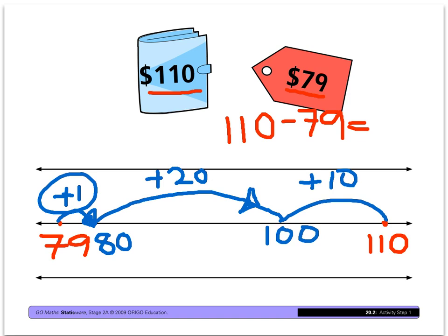And then he added them quickly together in his head and he went $10 plus $20 is $30, plus $1 is $31. So $110 take away $79 is $31.